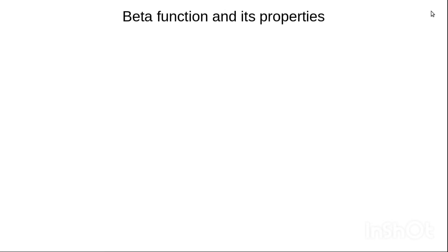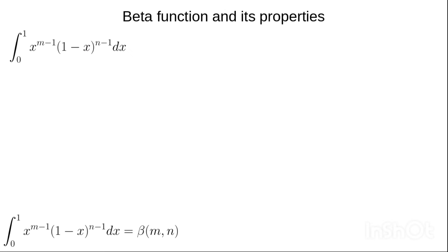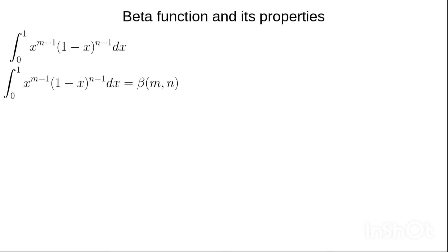The beta function is represented by an integral expression, and this integral form can be rewritten in a short form. So henceforth whenever we see this expression we know it is the beta function, written as B(m, n), where m and n are derived from the integral.